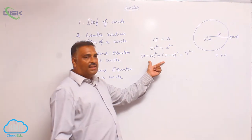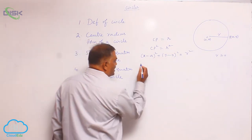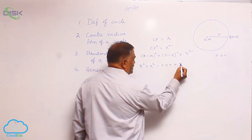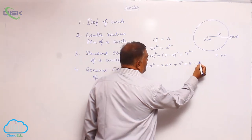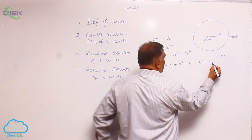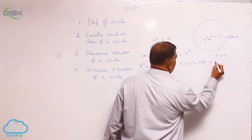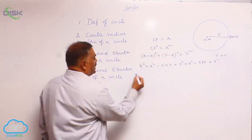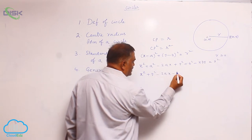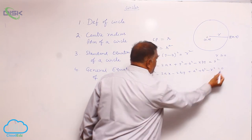It is called the center-radius form of a circle. Now, expanding this: x² + a² − 2ax + y² + b² − 2by + 2 = r². Rearranging this equation: x² + y² − 2ax − 2by + (a² + b² − r²) = 0.